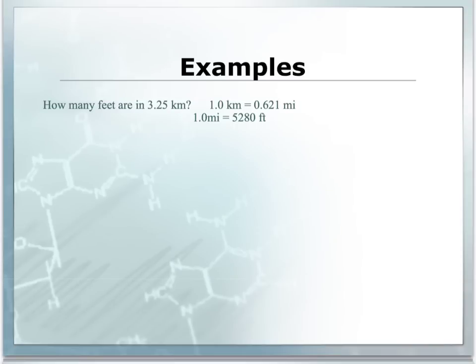Let's do another example following the steps in our dimensional analysis process. Step one is to write down the number that's given. That would be 3.25 kilometers. The question is asking us how many feet are in 3.25 kilometers. Then you're going to create a t-chart. For this example, I've given the conversions that you're going to use. You're going to need to go through and determine how to set them up so that the units cancel.